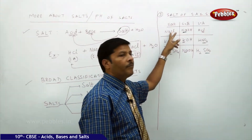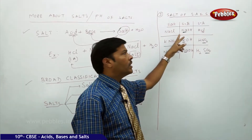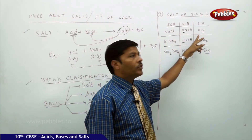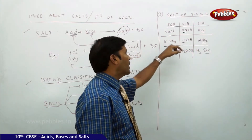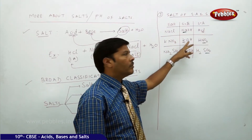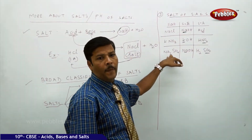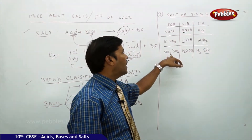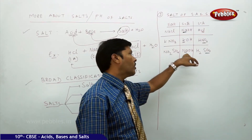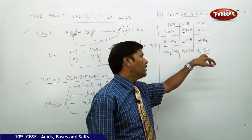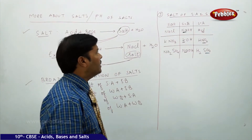Sodium chloride has strong base NaOH and strong acid HCl. Potassium nitrate has strong base potassium hydroxide and strong acid nitric acid. Sodium sulphate contains strong base sodium hydroxide and strong acid sulphuric acid.